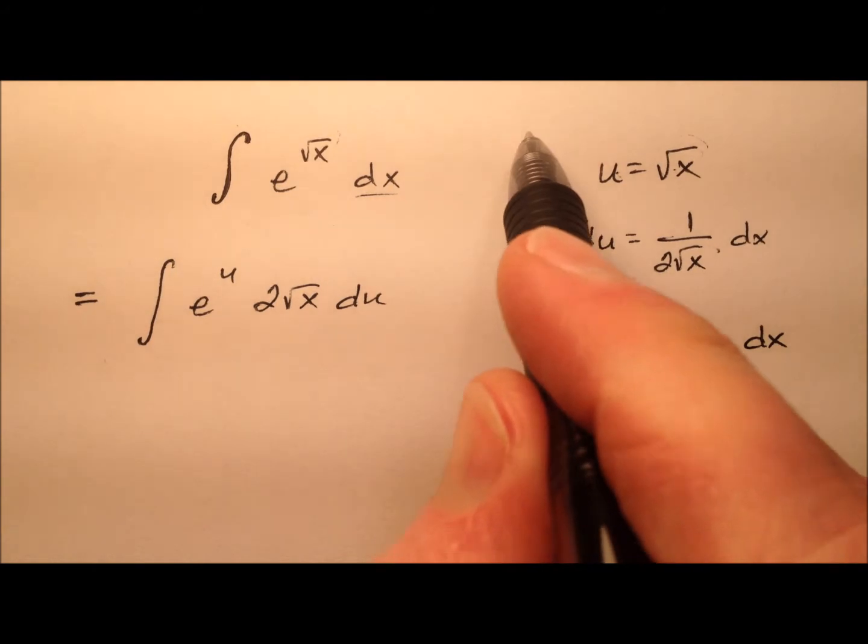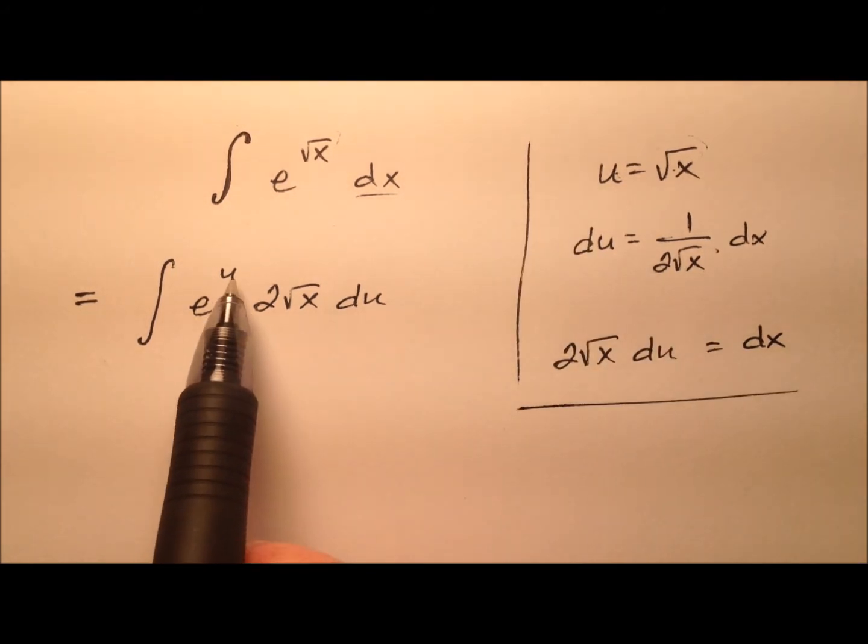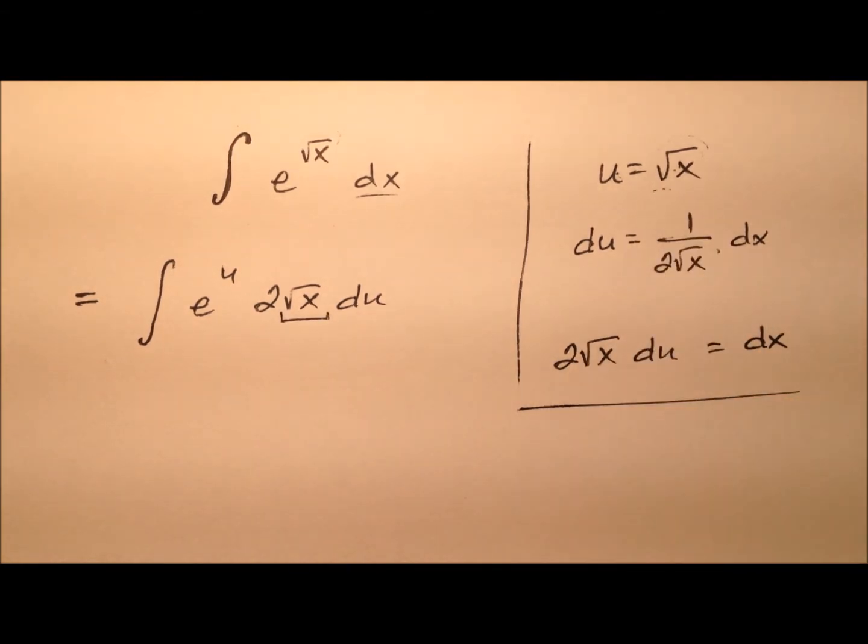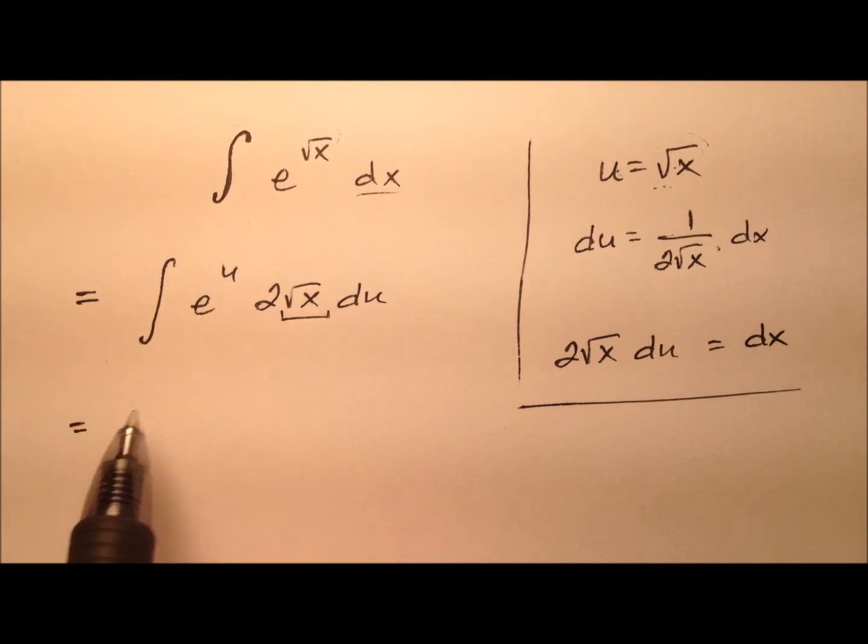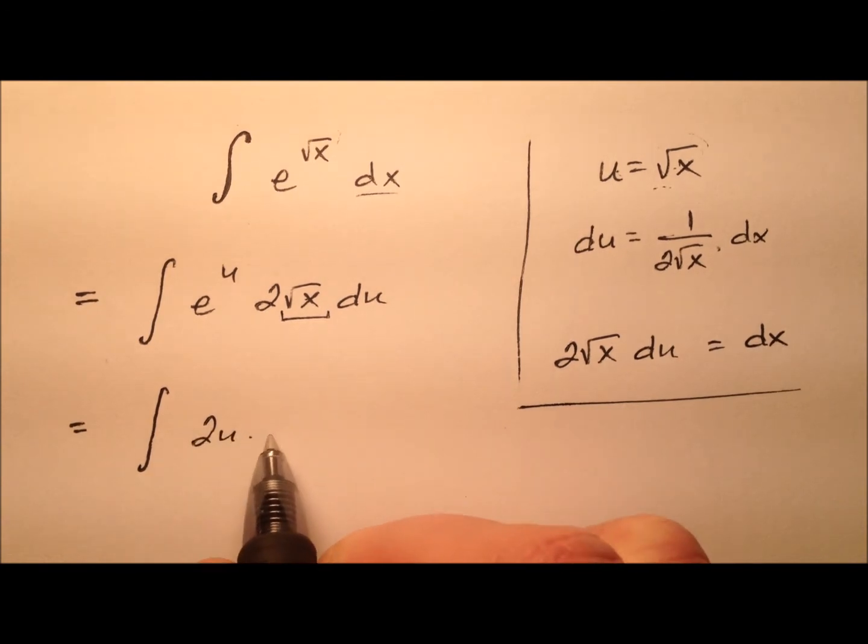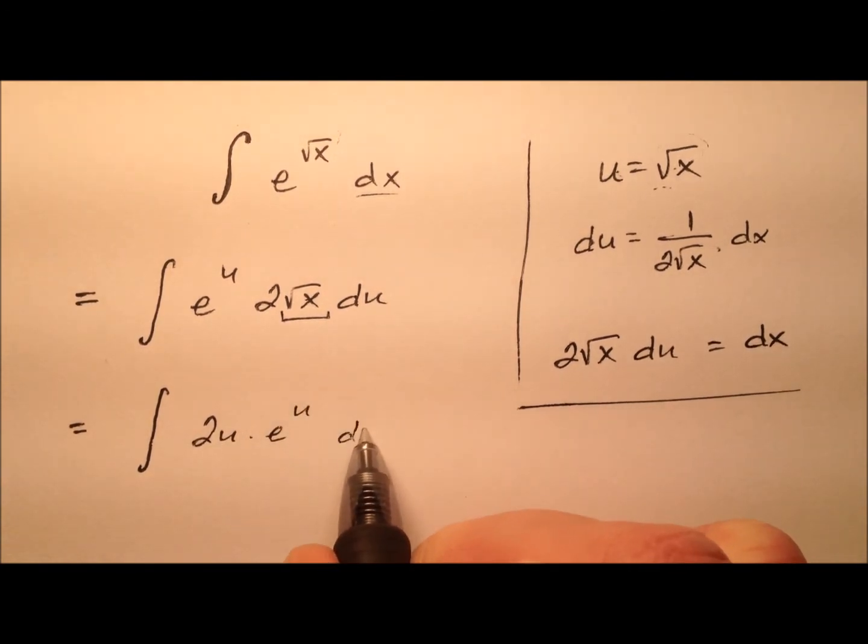Alright, well we kind of seem to have a problem here that we have a mixture of u's and x's. But I think we'll be okay because this square root of x right here was actually our u. So let's go ahead and kind of fix this up a little bit. So we have 2 times u times e to the u du.